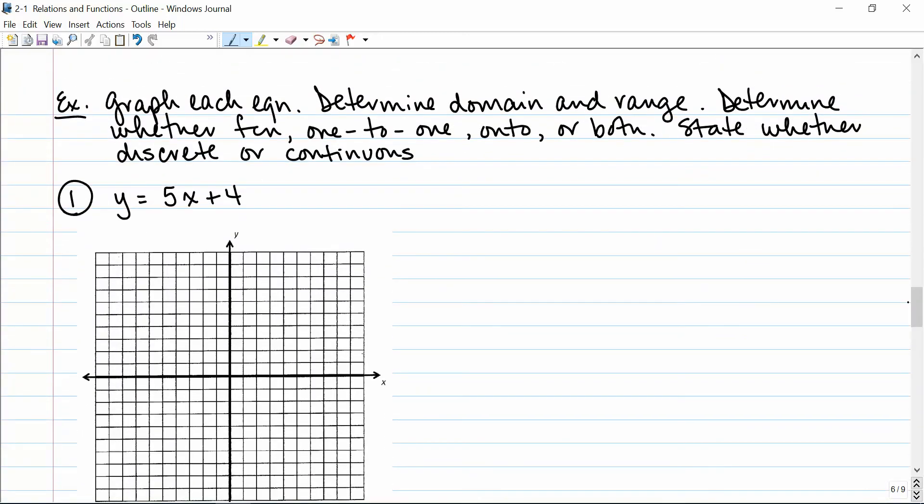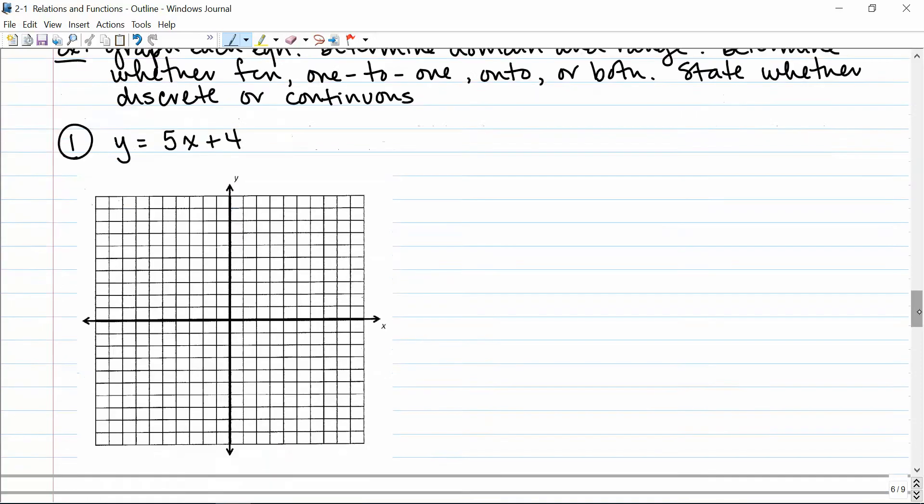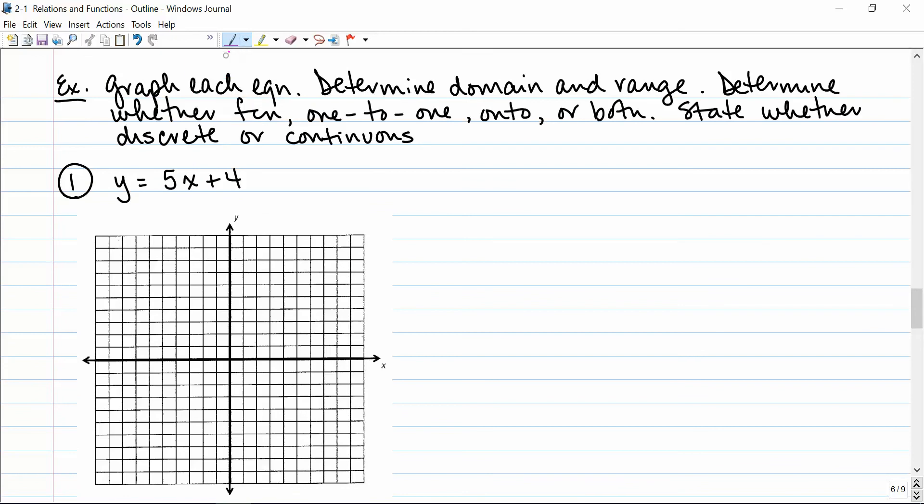So let's take a look at a couple more examples here. Graph each equation, determine the domain and range, and determine whether it's a function, whether it's one-to-one, onto, or both, and state whether it's discrete or continuous. So this first one is a line. You'll recognize it being in y equals mx plus b form. We graph this by graphing the y-intercept, which is 4, and then using the slope to move. In this case, the slope is 5, which means up 5 and right 1, or down 5 and left 1. And because it is a line, I'll connect this. And you can see that it does pass the vertical line test, so it is indeed a function.